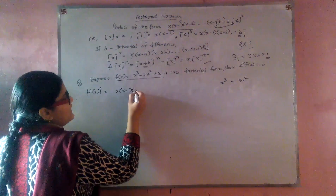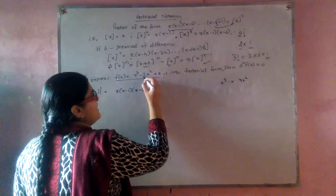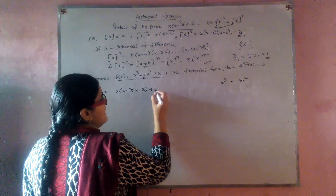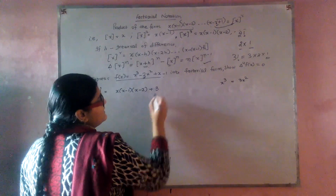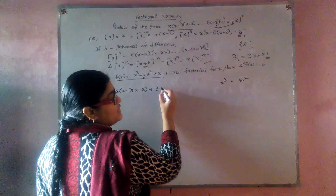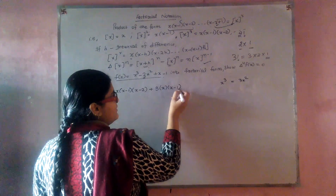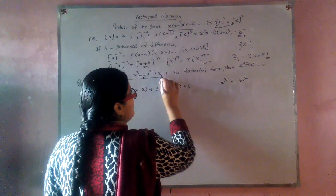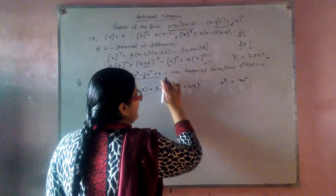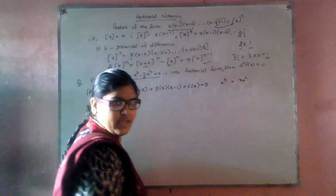For x cubed it becomes x(x minus 1)(x minus 2). Here there is a constant, so we take an arbitrary constant b. For x squared the notation is x(x minus 1). Here c for x becomes x only, and a constant term leads to d.